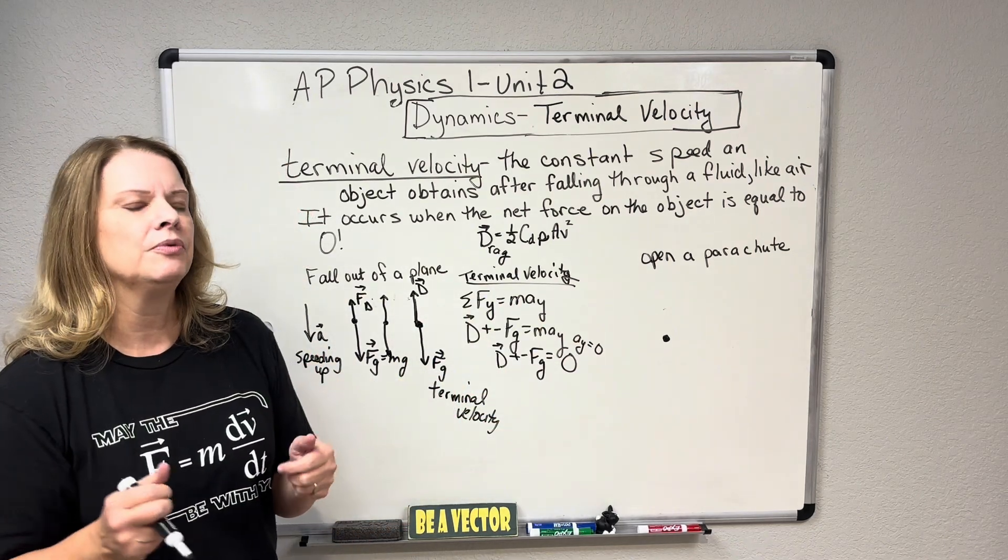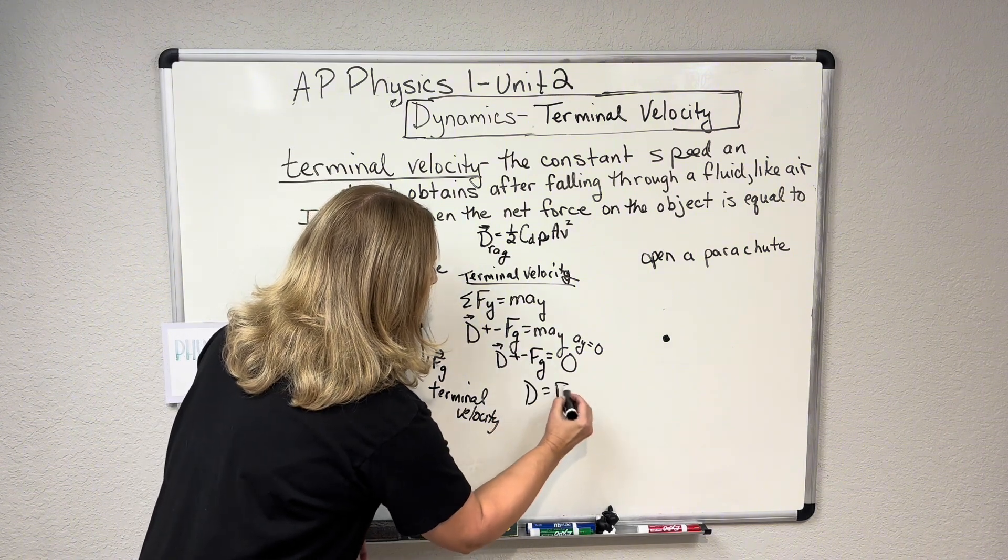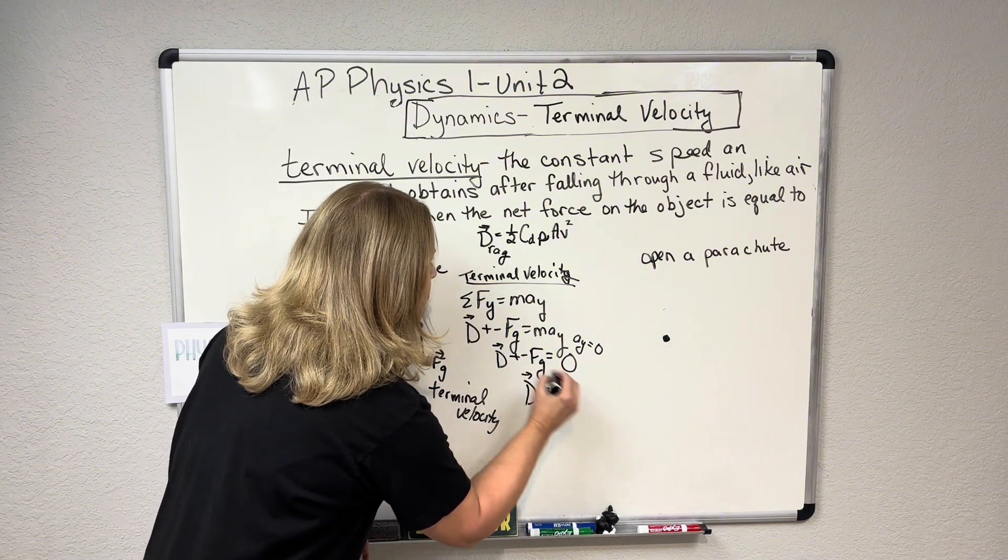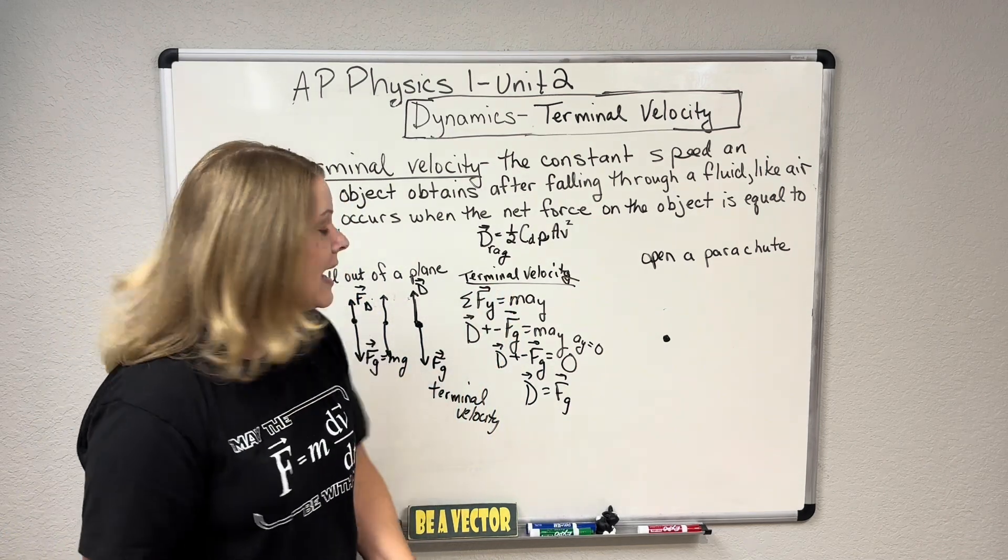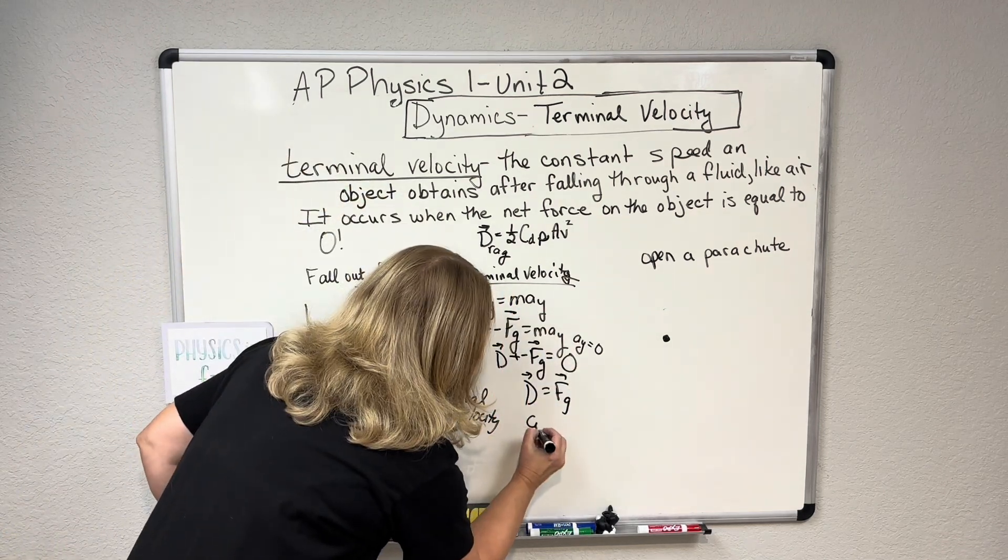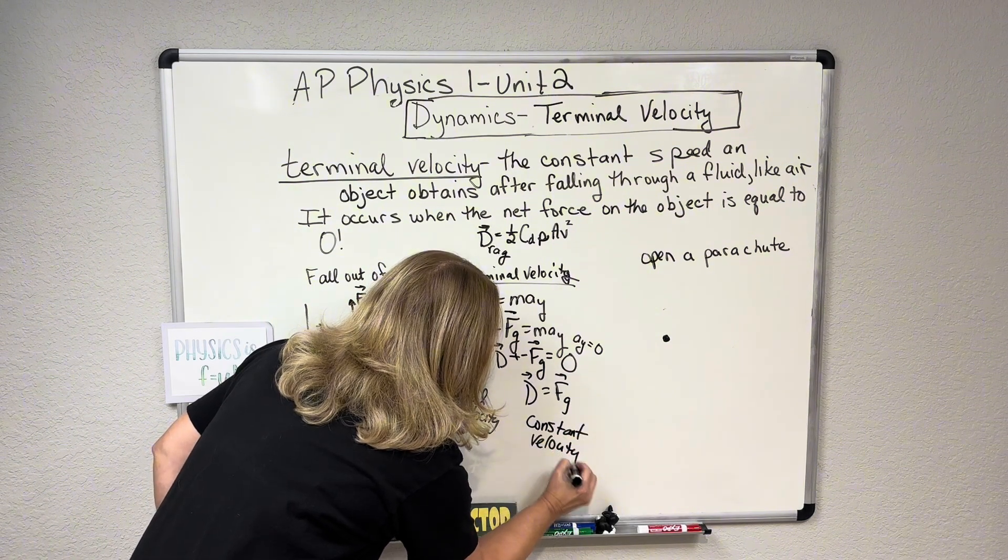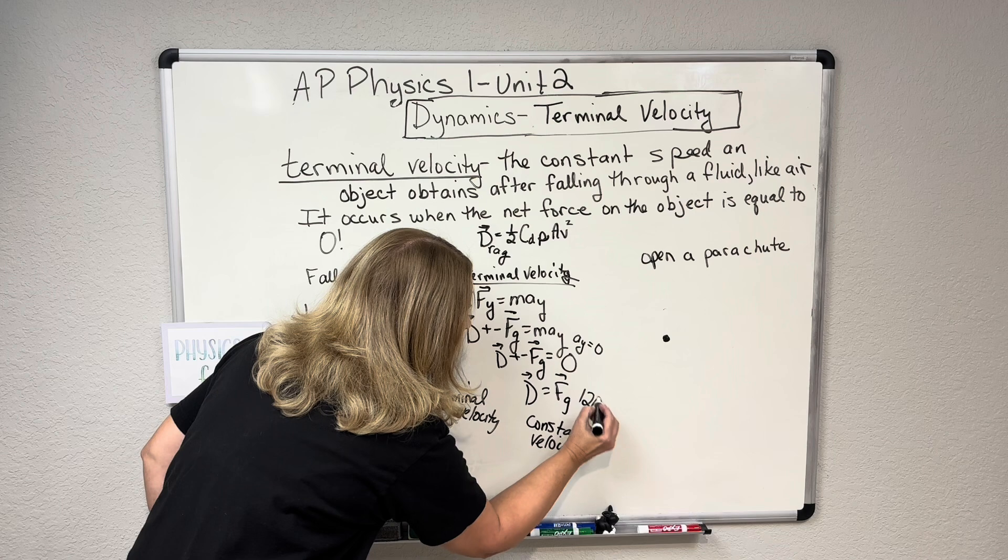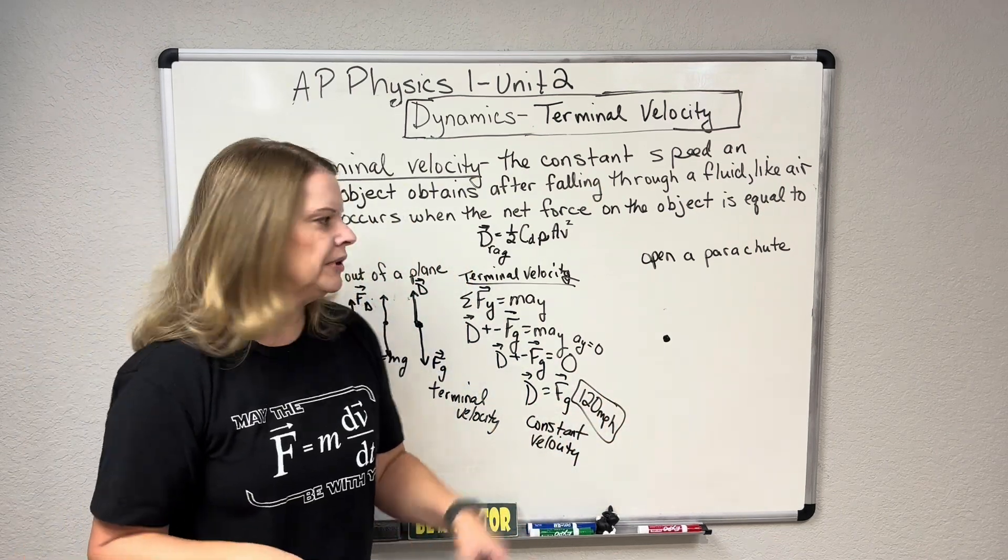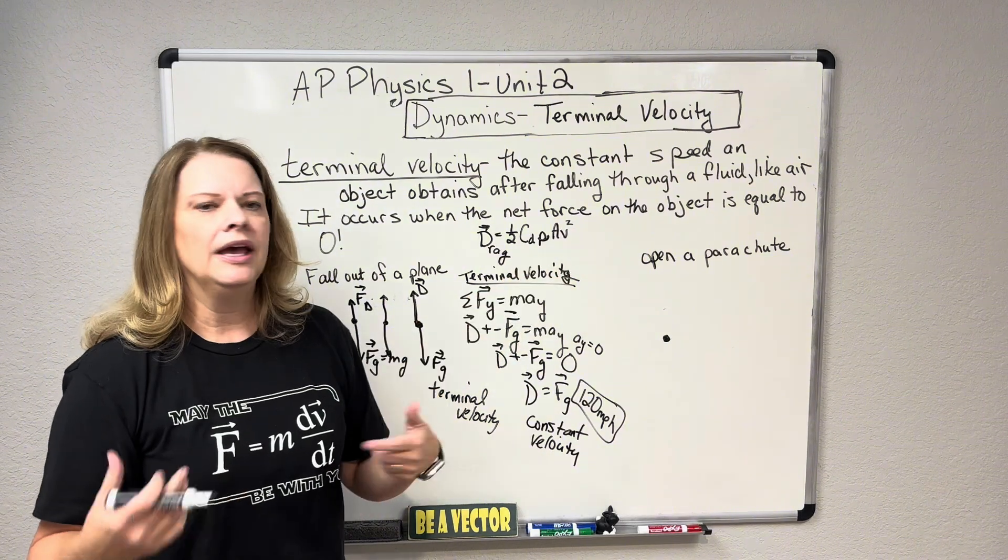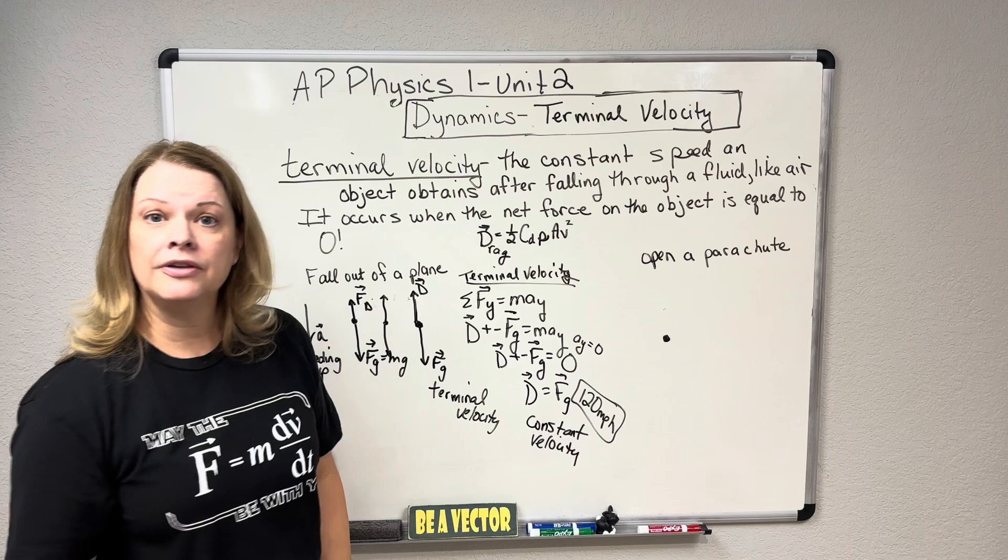Now this is where sometimes students are like, wait, wait, wait. So if that's the case, drag equals force due to gravity. So am I no longer falling anymore? No, that's not the case. You are not no longer falling. You're still falling down. You're just falling at a constant velocity. And by the way, for humans, that's about 120 miles per hour is our terminal velocity. You can tweak that a little bit depending on your surface area and that density of air, how high you start, but it's about 120 miles per hour.